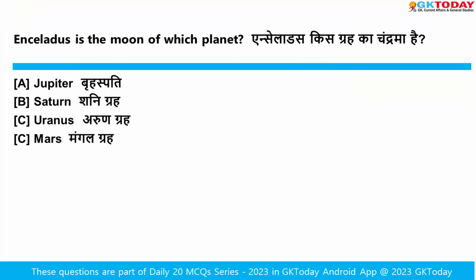Enceladus is the moon of which planet? Enceladus is the sixth largest moon of Saturn and it orbits in Saturn's E ring, which is the most major ring. Researchers have found that phosphorus, a key building block of life, is found below the moon's surface in the ocean beneath it. So the answer is Saturn.